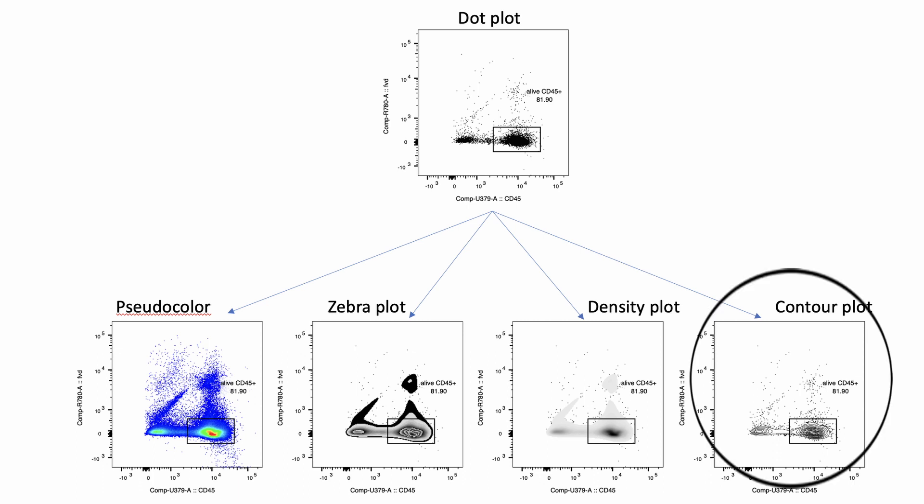The contour plots are really quite nice because they can highlight areas where your gate placement should go. So in this case, you're basically looking for the break between these two circles. This is really clear. It would be pretty obvious where this gate goes no matter what. But sometimes when you have a challenging population, using the contour can make it more clear than the dot plot or the pseudo color does.